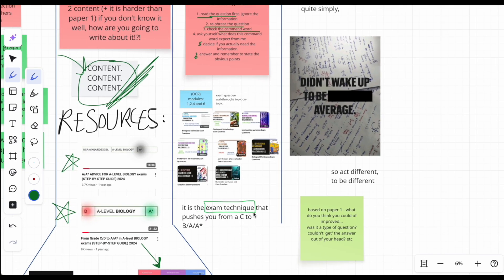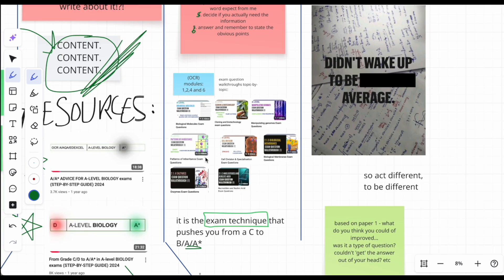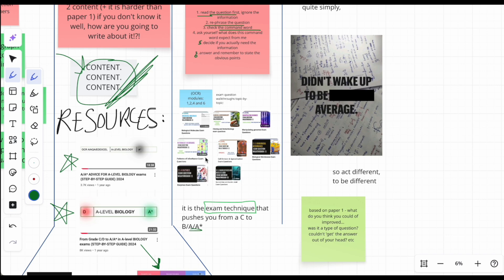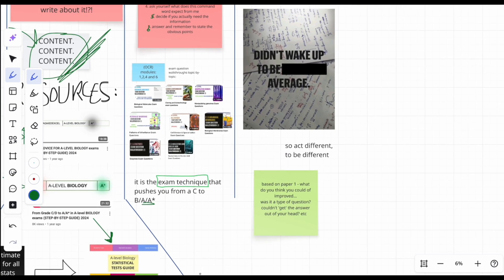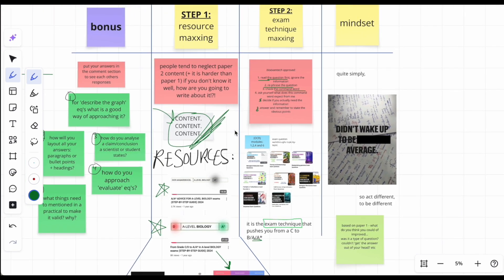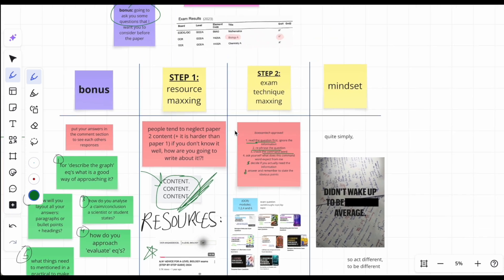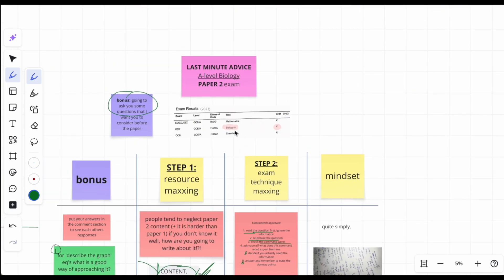Then I check the command word. Is it evaluate? If it is, then I use my framework for evaluation questions. Is it a question on describe? Then I will use my describe framework. And then I would ask myself, yeah, what does the command word expect from me? Because there is expectations. An evaluate question and a compare question are not the same. An outline question, a suggest question are not the same. You can't treat them the same way either. And then if I can answer the question based on what I did from step one to four, then I'll just answer it. If I can't, then I would read the information to see whether it will help me or not.